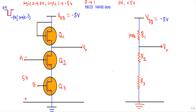This is the structure of the PMOS NAND gate. Here you will see we have a total of three transistors: Q1, Q2, and Q3. All of them are P-Type Enhancement MOSFETs. We indicate the P-Type MOSFET by drawing the arrow in the inward or inner direction.